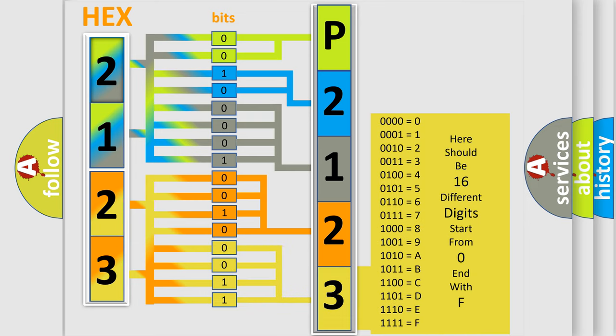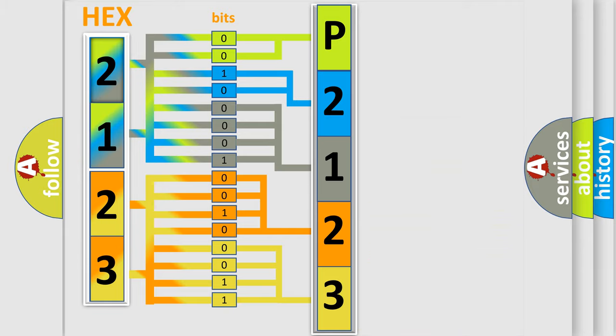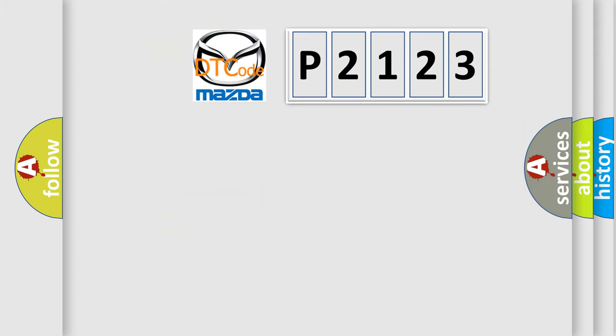We now know in what way the diagnostic tool translates the received information into a more comprehensible format. The number itself does not make sense to us if we cannot assign information about what it actually expresses. So, what does the diagnostic trouble code P2123 interpret specifically?